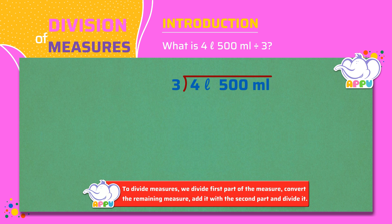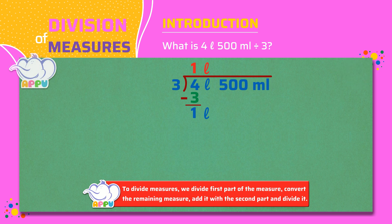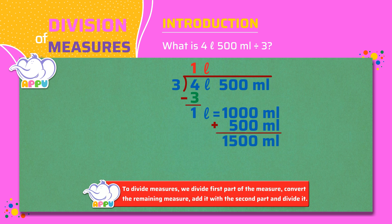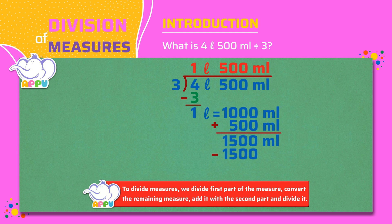3 divides 4 once. That is 1 liter. And 1 is the remainder. We know that 1 liter equals 1000 milliliters. We add this to 500 milliliters to get 1500 milliliters. 3 divides 1500 five hundred times. That is 500 milliliters. And 0 is the remainder. So the answer is 1 liter 500 milliliters.